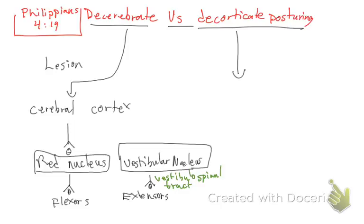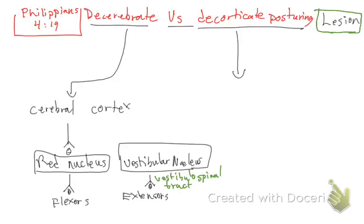Before we see the posturing, we need to understand the pathway. Remember the keyword here is 'lesion' for everything. Now to see the decorticate pathway, we need to start again from the cerebral cortex.